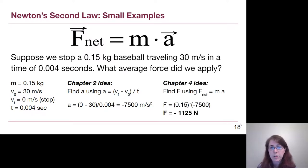Now that we have the acceleration, now we can turn to our chapter 4 understanding. We would find the force using F net equals ma, so the mass times the acceleration. We would have to apply a force of 1,125 newtons, we can round that, opposite the direction of motion, that's where that negative sign comes from. We basically have to push on the baseball with the bat in order to slow it down and stop it.